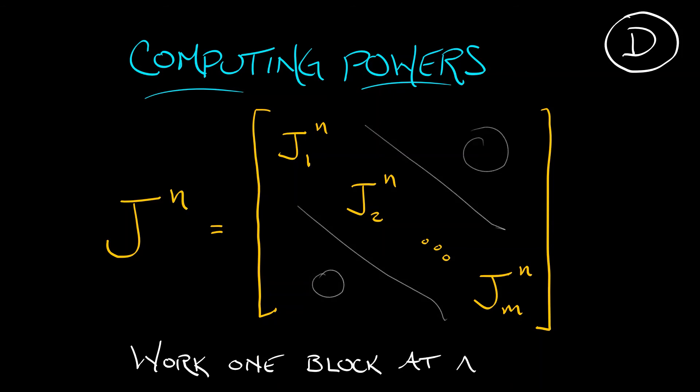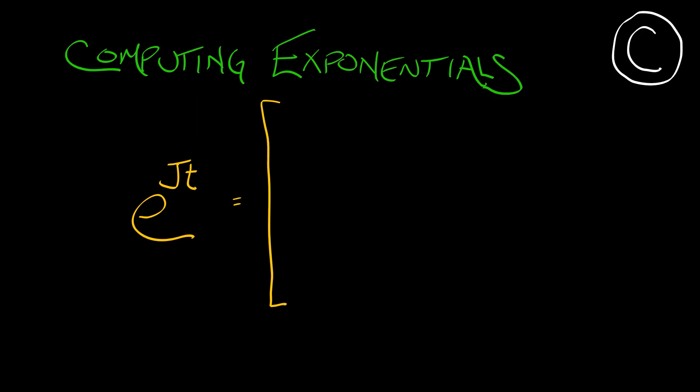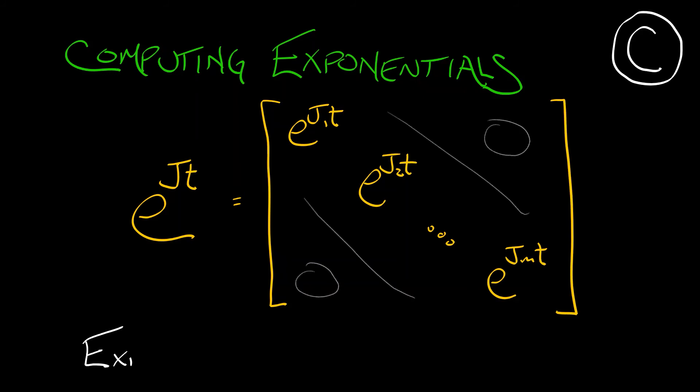You can verify this by multiplying block diagonal matrices together. The same thing holds with matrix exponentials. For a block diagonal matrix J, e^(Jt) is the block diagonal matrix with the same pattern, each diagonal block being the exponential e^(Jᵢt). That's why we want this block diagonal Jordan form.